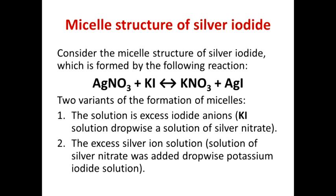Let us discuss silver iodide sol formation — this is a chemical condensation method. We use the reaction: AgNO₃ + KI → KNO₃ + AgI. To use a chemical reaction for colloidal solution preparation, one of the products must be insoluble — in our case that is AgI. The concentration of reagents should be very low.